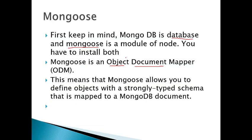Mongoose is an Object Document Mapper, or ODM. It maps your object to the document in your database. As we know, a document is a record set. The object in our application is mapped with the document available in the DB, and we communicate with Mongoose, which in turn communicates with MongoDB. Mongoose allows you to define objects with a strongly typed schema. MongoDB itself has dynamic schemas, but we use Mongoose to enforce a strongly typed schema that is mapped to the MongoDB document.